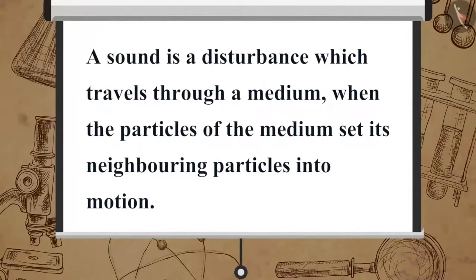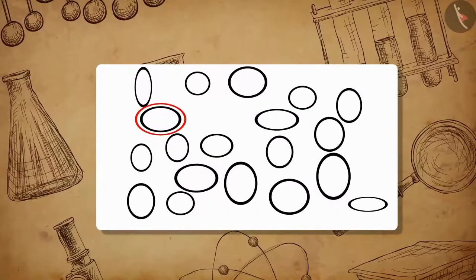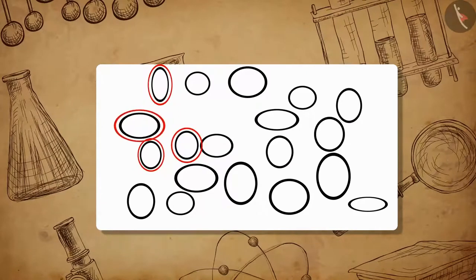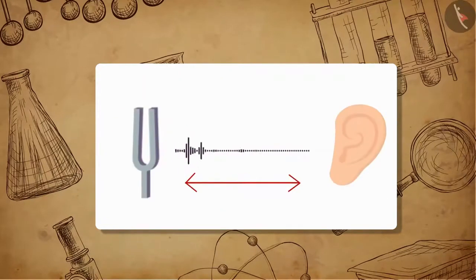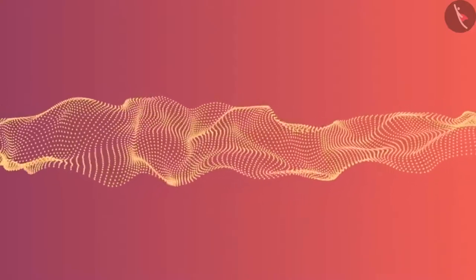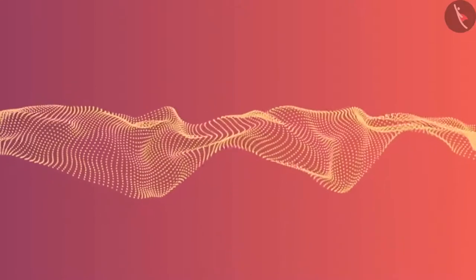Thus, sound is a disturbance which travels through a medium when the particles of the medium set neighboring particles into motion. These particles keep producing similar motions in other particles of the medium. The disturbance created by any source of sound propagates through the medium, but the particles of the medium do not travel. This is what happens during the propagation of sound, and so it can be visualized as a wave.